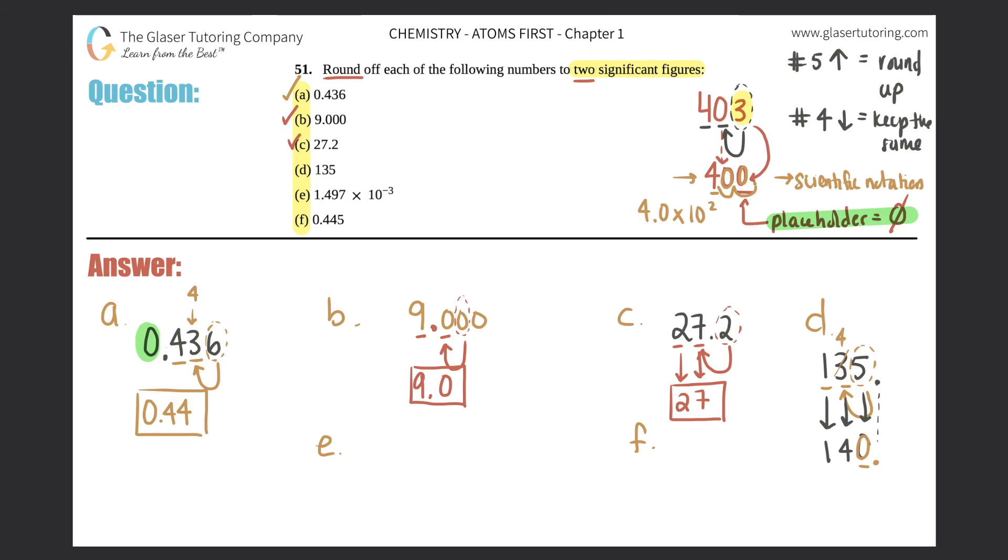We only want two sig figs. So I have to get rid of that decimal. And in this case, that zero does not count anymore. And there it would be. The one and the four are the only ones I count. So I'll just put that up here. 140 is the answer to D.